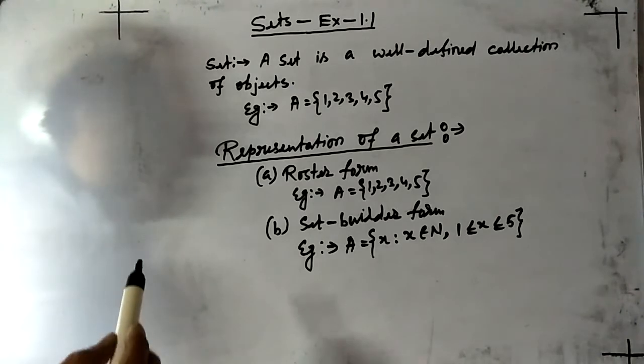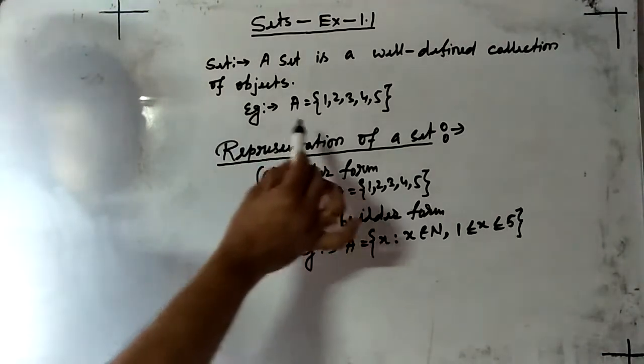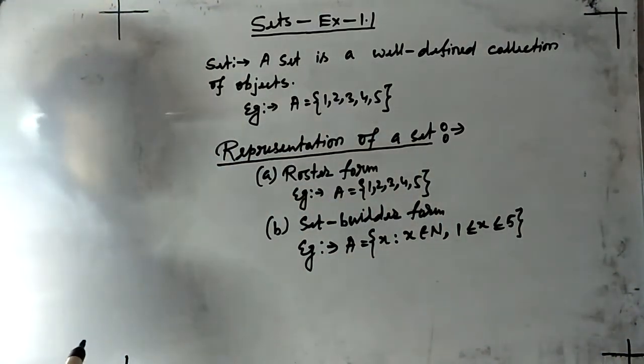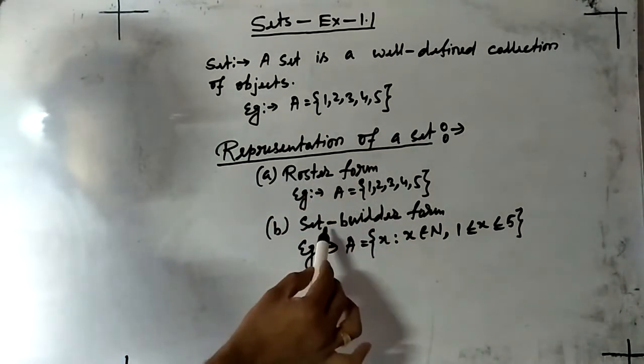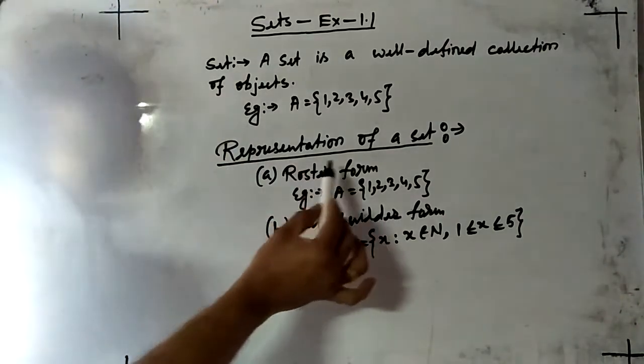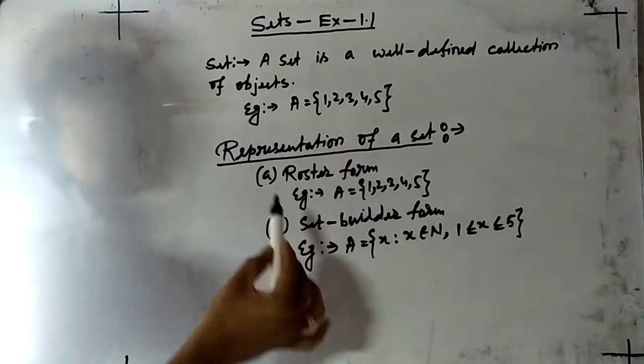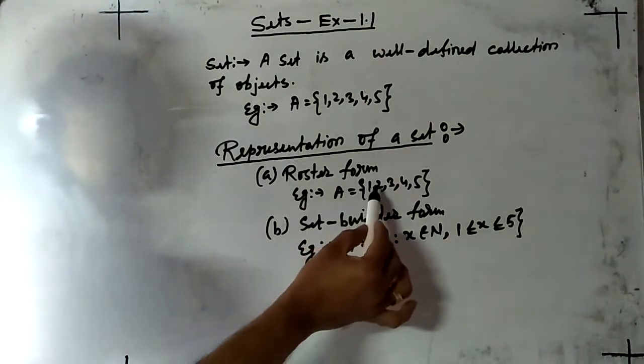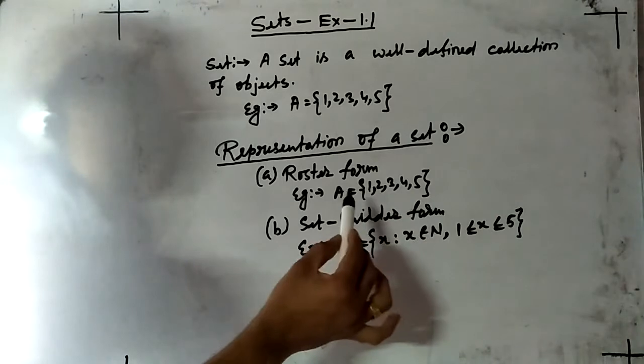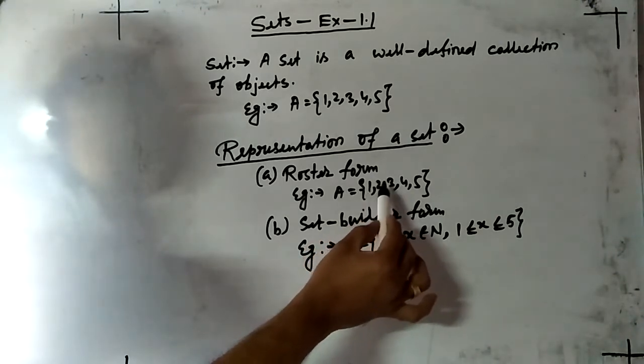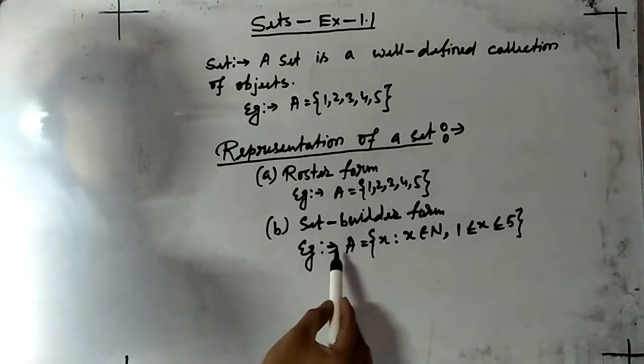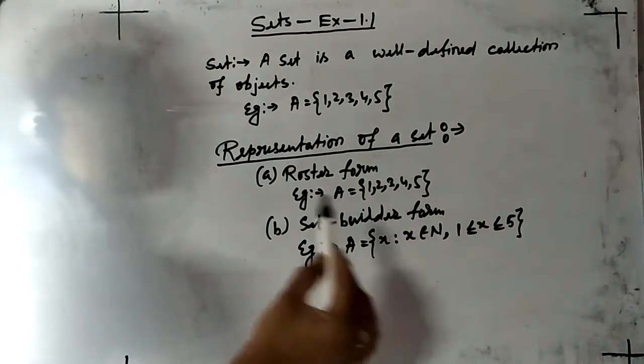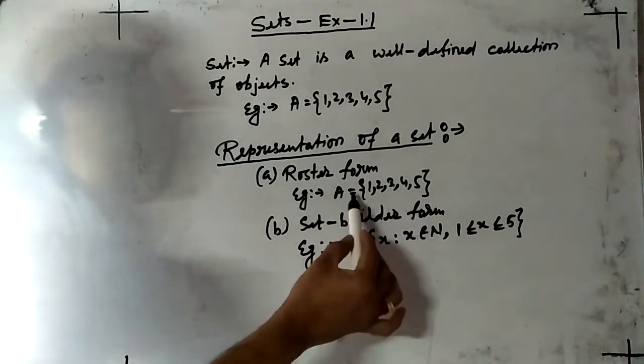Representation of a set. How can we represent a set? We can represent a set by two ways. One is the roster form and second is set builder form. In roster form, objects are comma separated in curly brackets, and you have to write all objects.